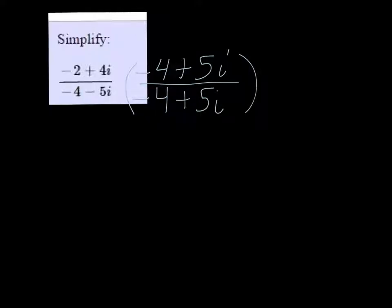So the negative is there, and I'll put it in white so you can see a little bit better. So when I do that, on the top I get negative 2 plus 4i times negative 4 plus 5i.